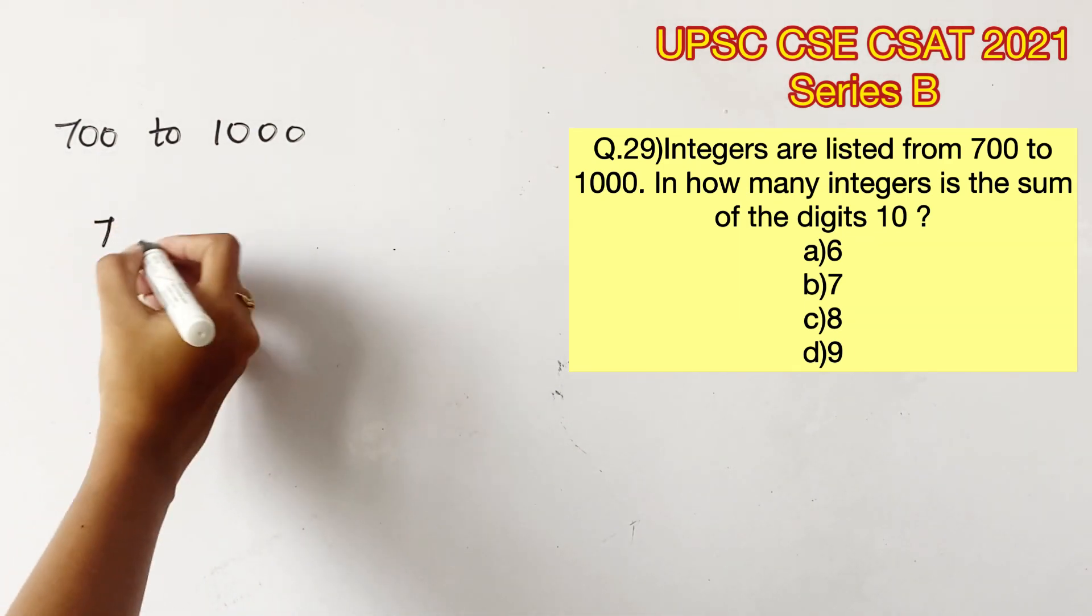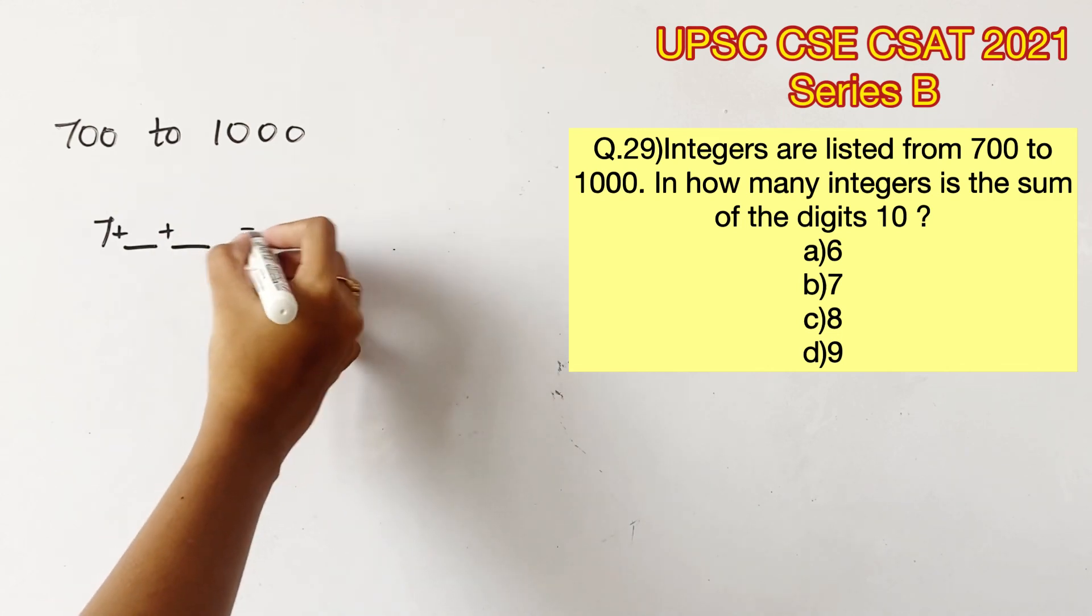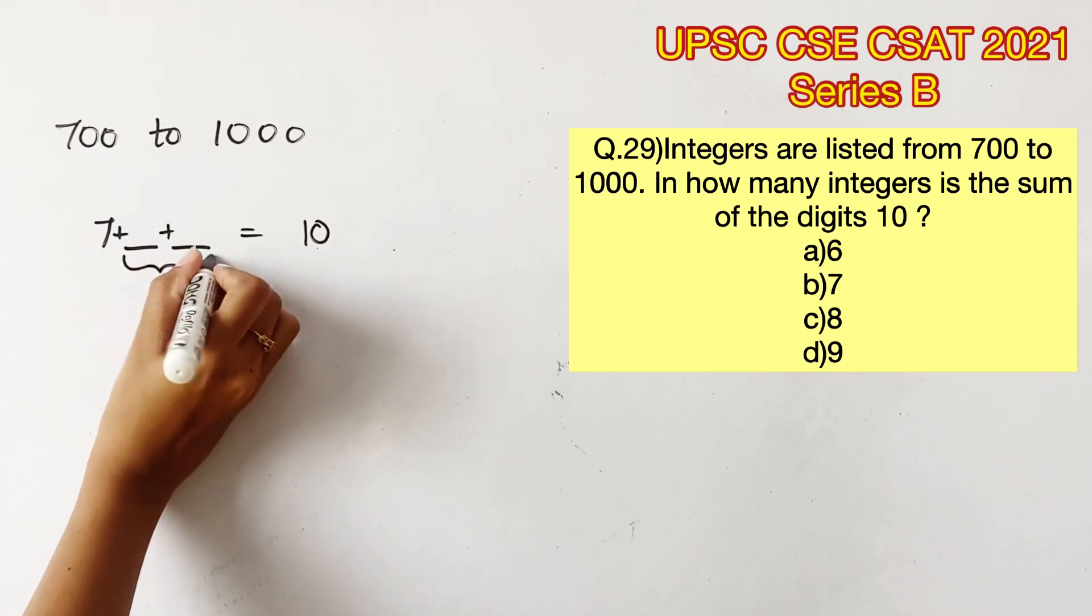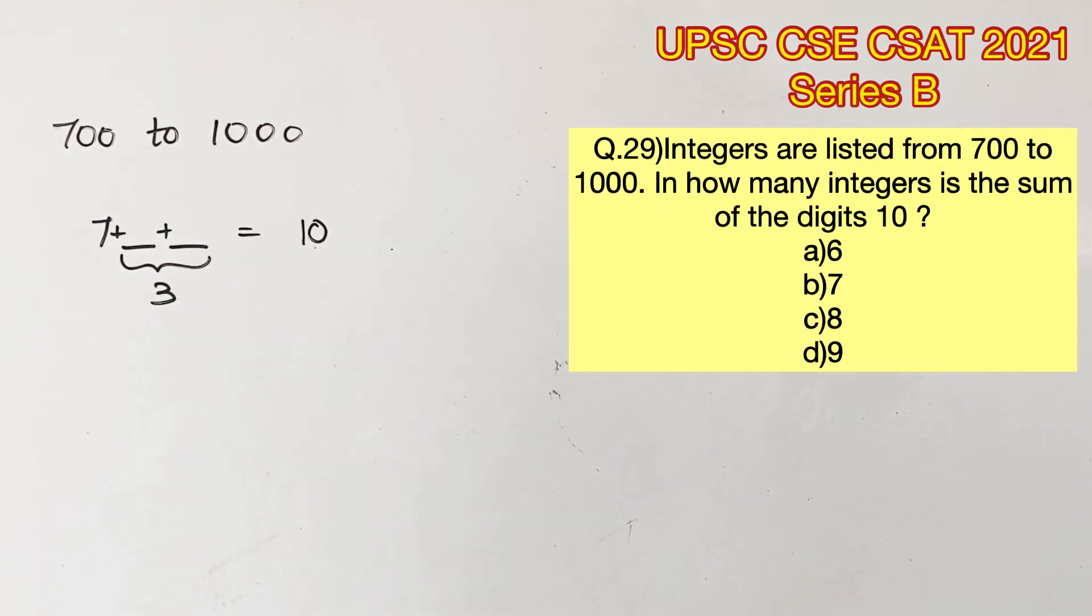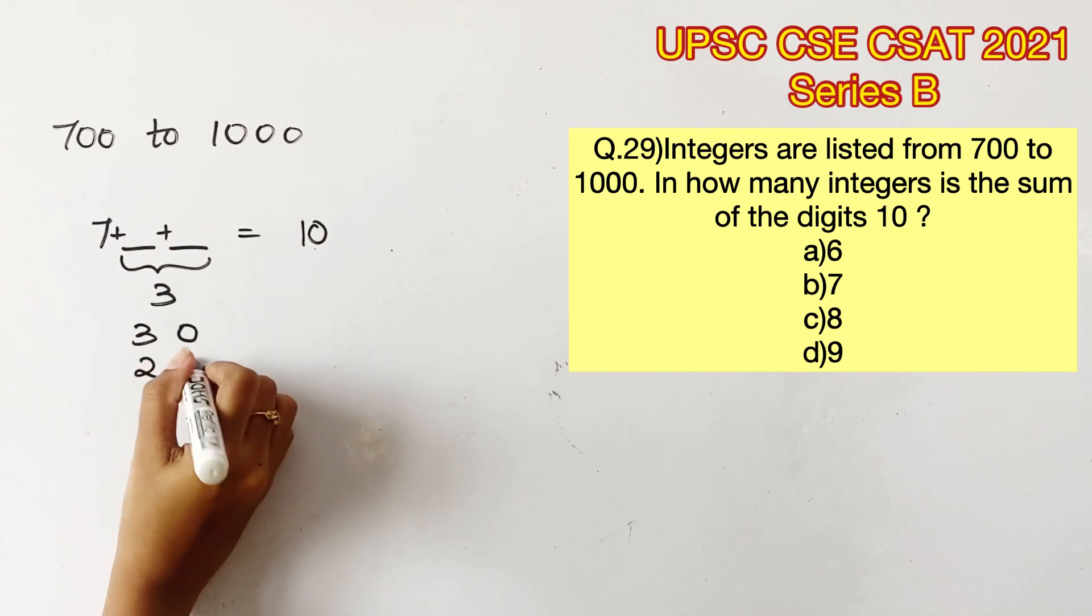Let's say I take a value in the 700s, which means 700 to 799. So the sum of these three digits should give us 10. So if I take 7 in the first place, these two digits should add up to 3. So the possibilities of two numbers adding up to 3 can be